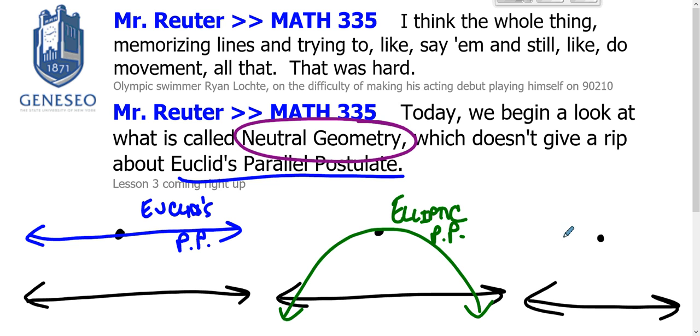Likewise, there is the parallel postulate that says, sure, you've got this parallel, but you've also got this parallel, and you've got this parallel, and you've got a whole bunch of parallels. This is called the hyperbolic parallel postulate.